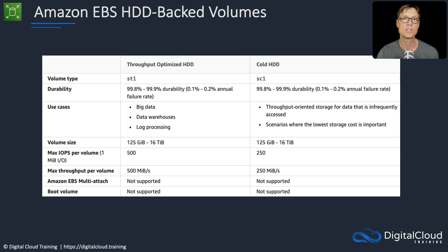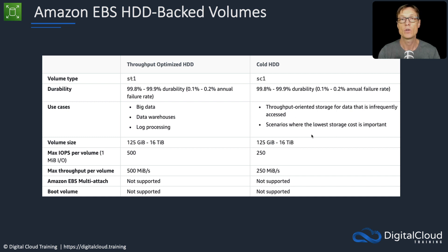The HDD-backed volumes are the ST1 (throughput optimized HDD) and SC1 (cold HDD). You can get reasonable throughput from these, but very limited IOPS performance — 500 IOPS and 250 IOPS per volume respectively. You wouldn't use these for workloads with sustained IOPS requirements. However, for throughput-oriented, infrequently accessed workloads — such as big data, data warehouses, or log processing — they can work. Note that neither ST1 nor SC1 supports multi-attach or booting.